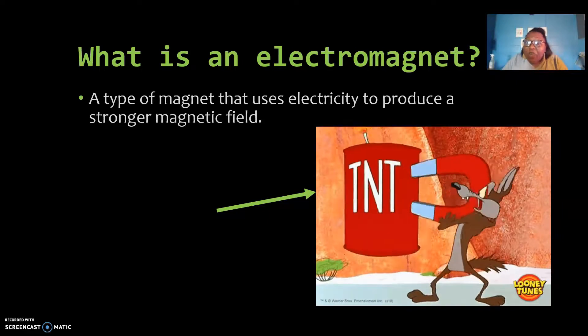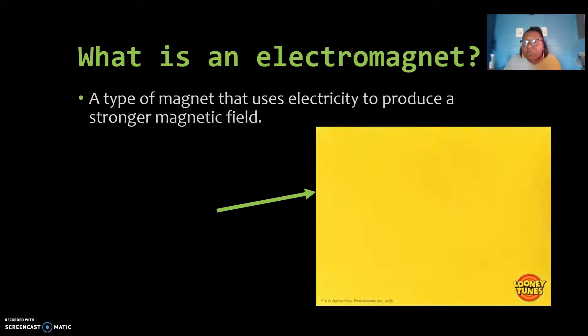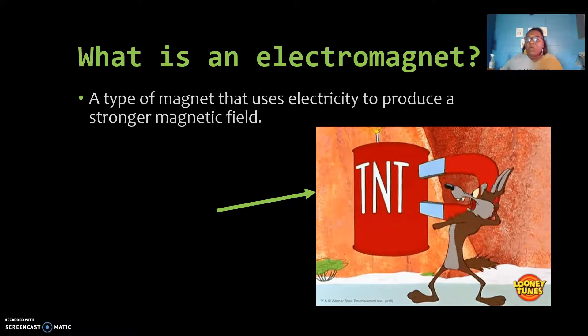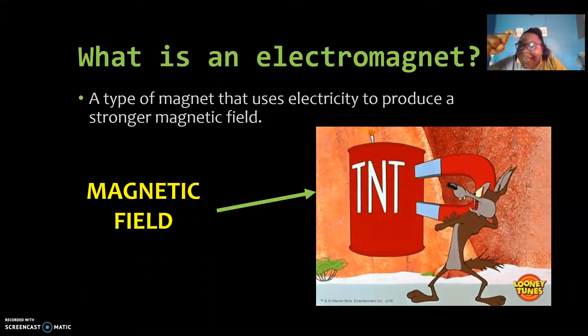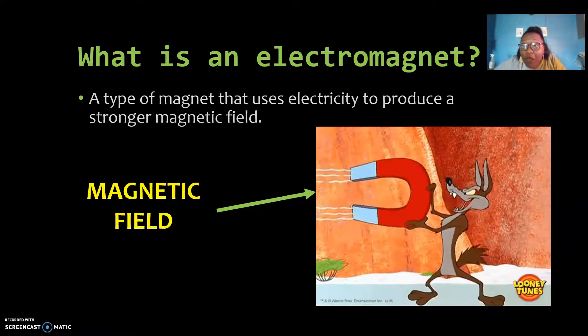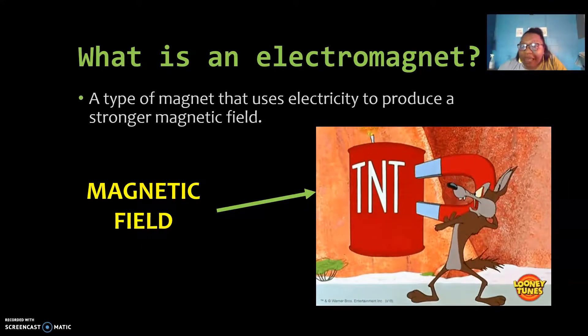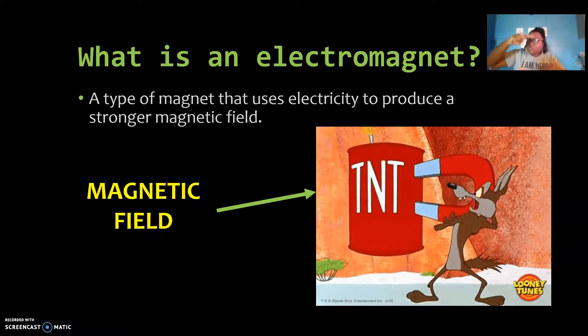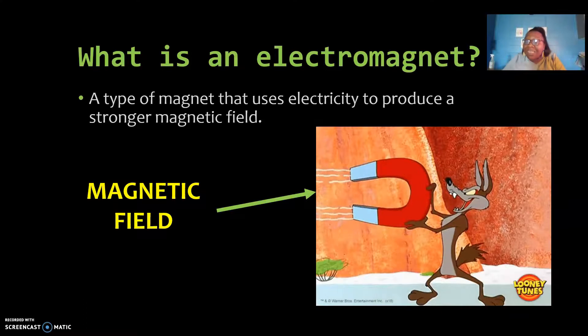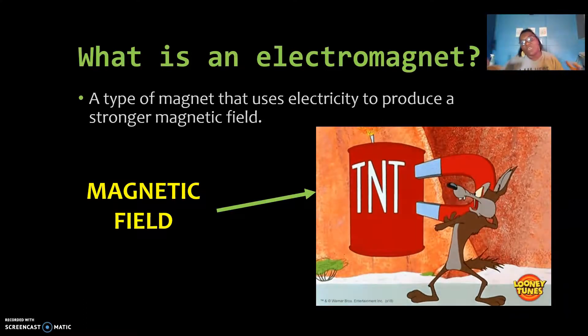So Wile E. Coyote, we've seen magnetic fields in our cartoons since we were little. We just didn't know what they were. Yes, guys, a magnetic field are those little bitty lines that are coming off of that magnet before Wile E attracts that big bomb. So what we see there is those little lines, those little squiggles, that is showing us a magnetic field.